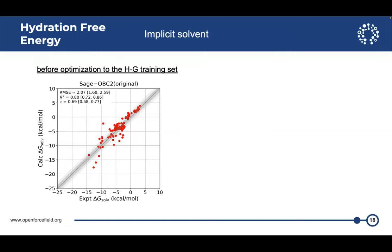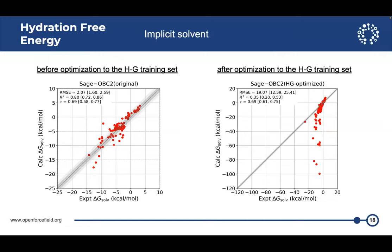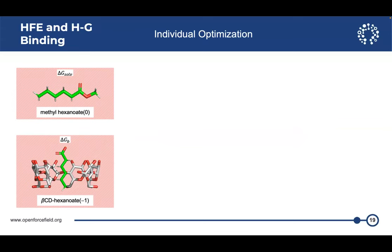But when we use the host guest optimized radii, this is what we get. We see that the host guest optimized radii deteriorates the hydration free energies. And looking at the outliers, these are the molecules containing nitrogen atoms. Remember, it dropped from 1.55 to 0.5.